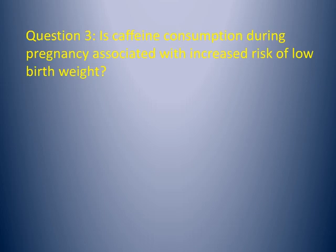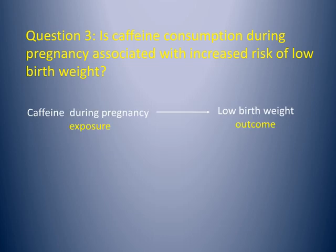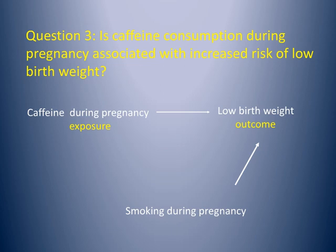It is now time to see an example of a confounding factor. Question 3. Is caffeine consumption during pregnancy associated with increased risk of low birth weight? Exposure to caffeine during pregnancy could be associated with increased risk of low birth weight. Smoking during pregnancy could also be associated with increased risk of low birth weight. Is this a case of multiple exposures? It is necessary to determine which one of the two is the confounding factor.